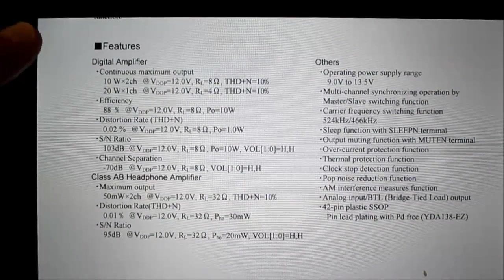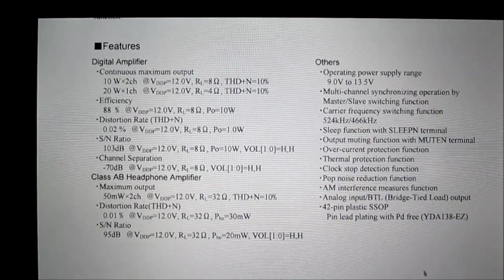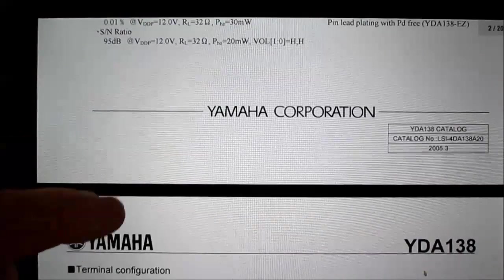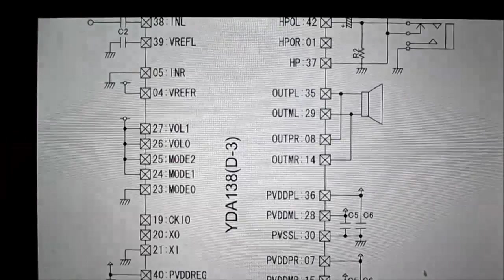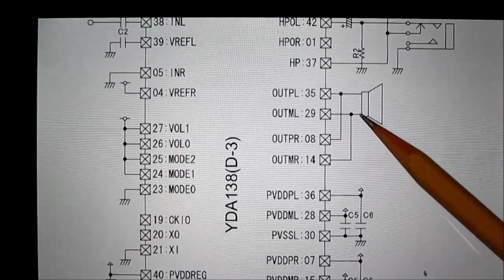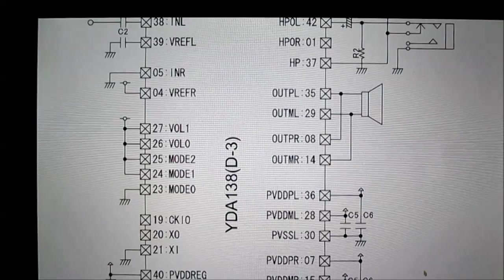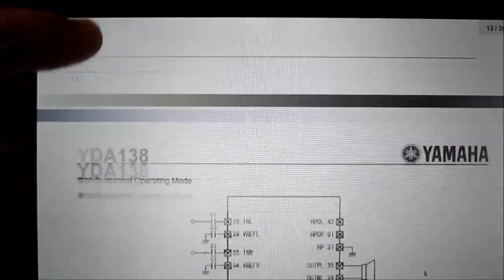And it is a class D amplifier but it has a class AB headphone amplifier. Although that is not used on this board I'm testing. But they do have that functionality in the IC. Here they're showing the amplifier is parallel for 4 ohm loads. You can use it with 8 ohm loads this way because the board is hardwired. And it works just fine that way.